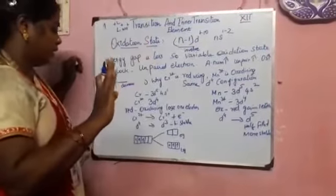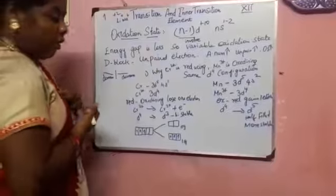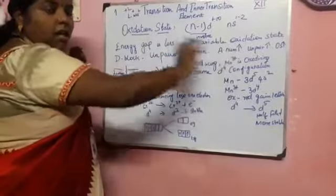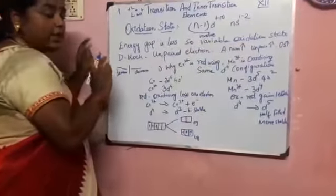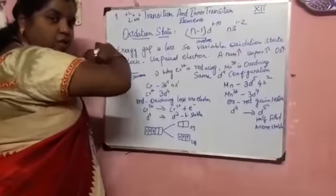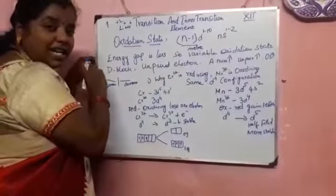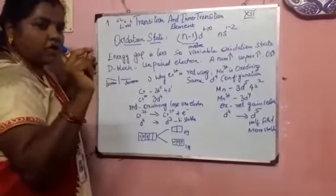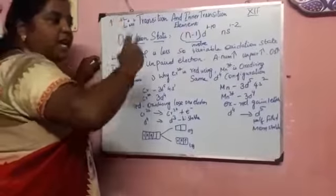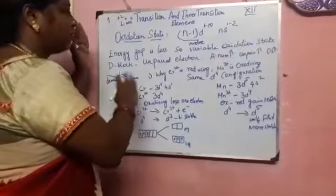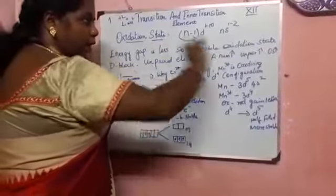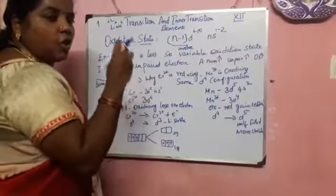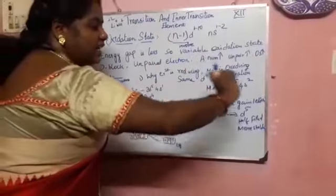Looking at the oxidation state trend from scandium to zinc in the 3d series: first, going from the start, the oxidation state increases. At the middle elements, the oxidation state reaches a maximum. Then again, it decreases toward the end. So the oxidation state for D-block elements first increases, reaches a peak in the middle, and then decreases again.